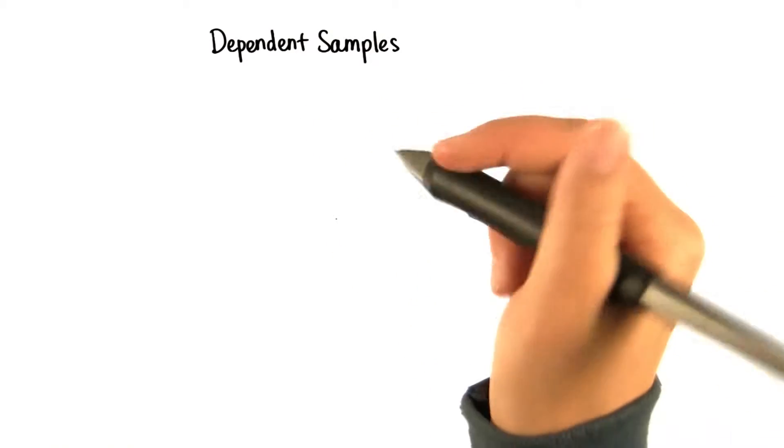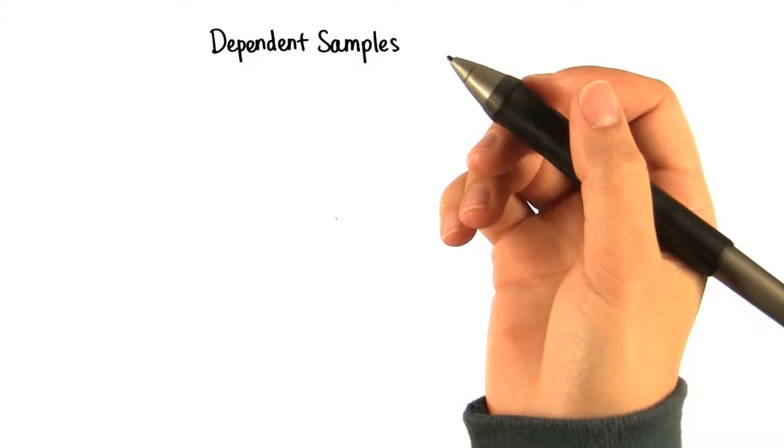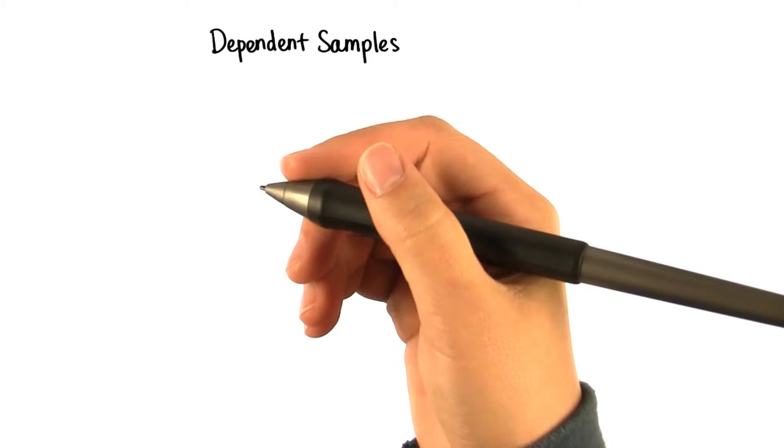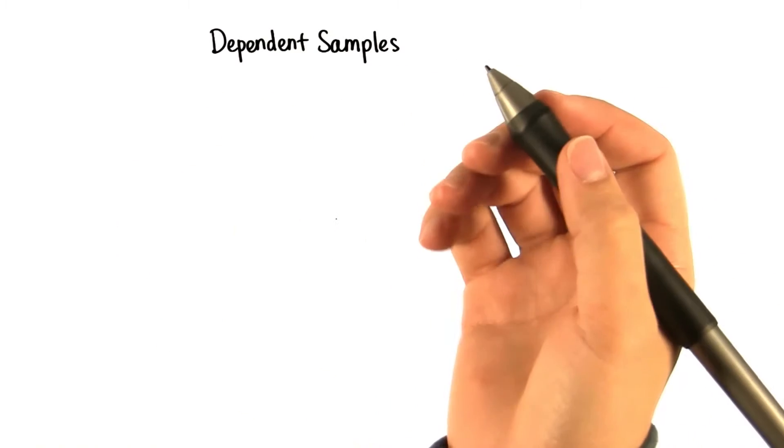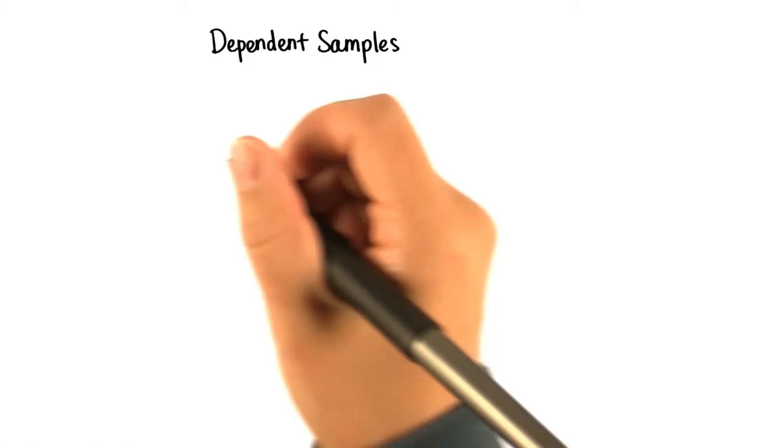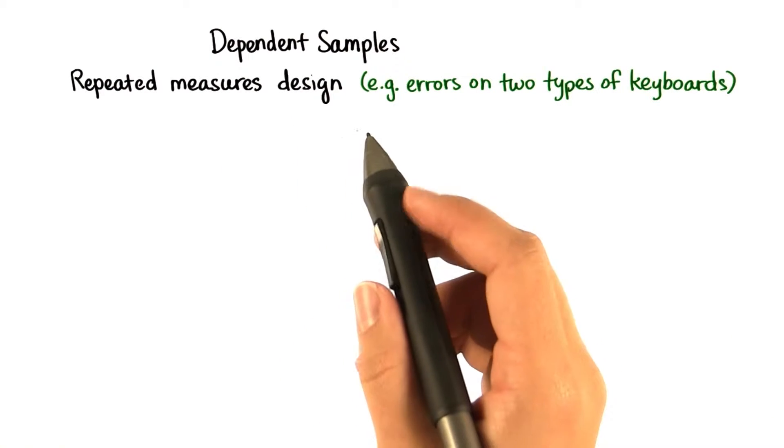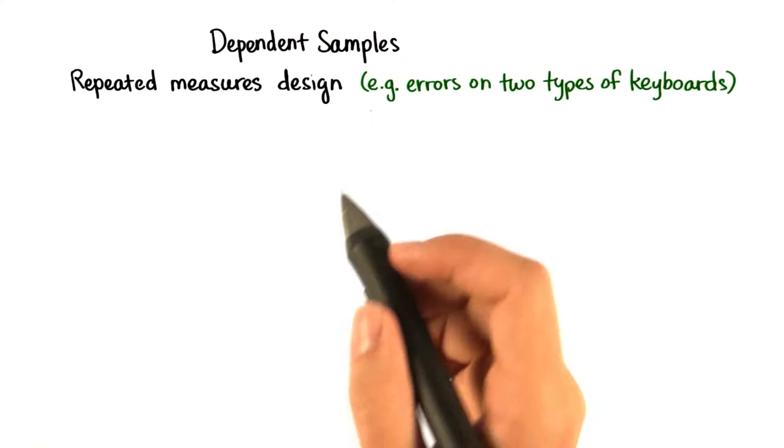You just saw one type of dependent samples t-test, where we measure samples from two different populations. In the case of the last example, the populations were the number of errors made typing a 20-word text message within 30 seconds on each keyboard configuration. This is called a repeated measures design, and the null hypothesis is that these two population means will be the same.